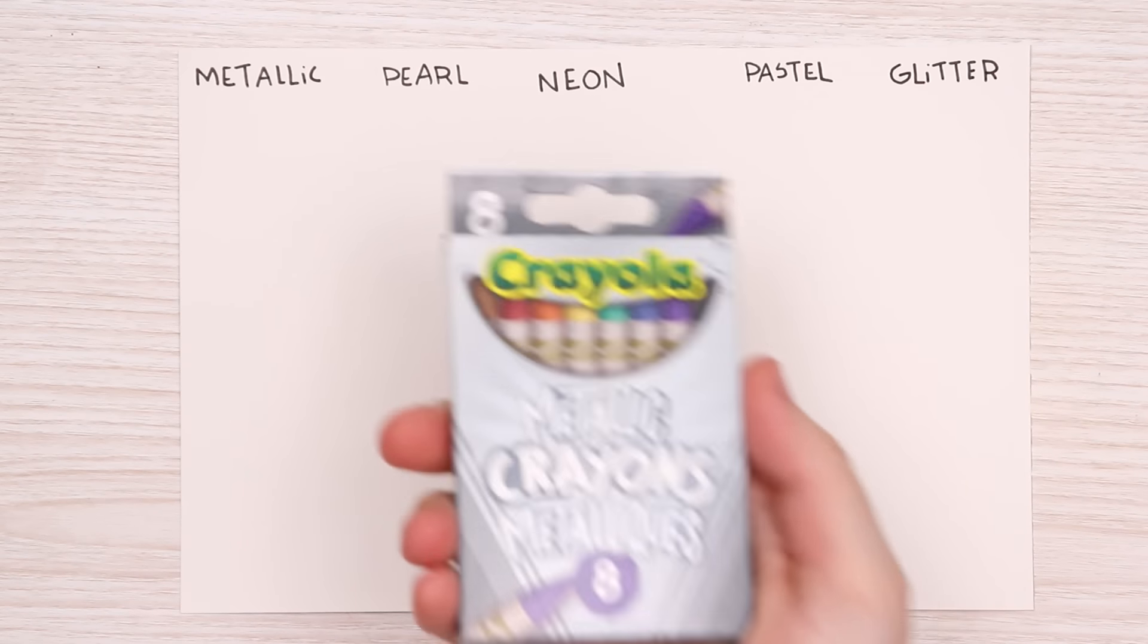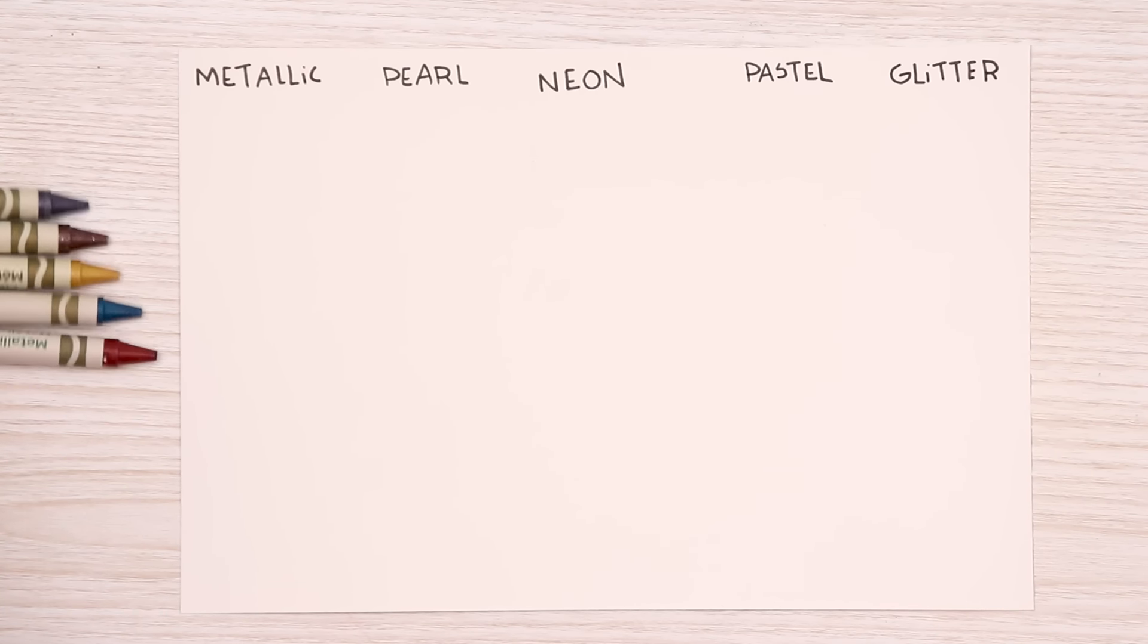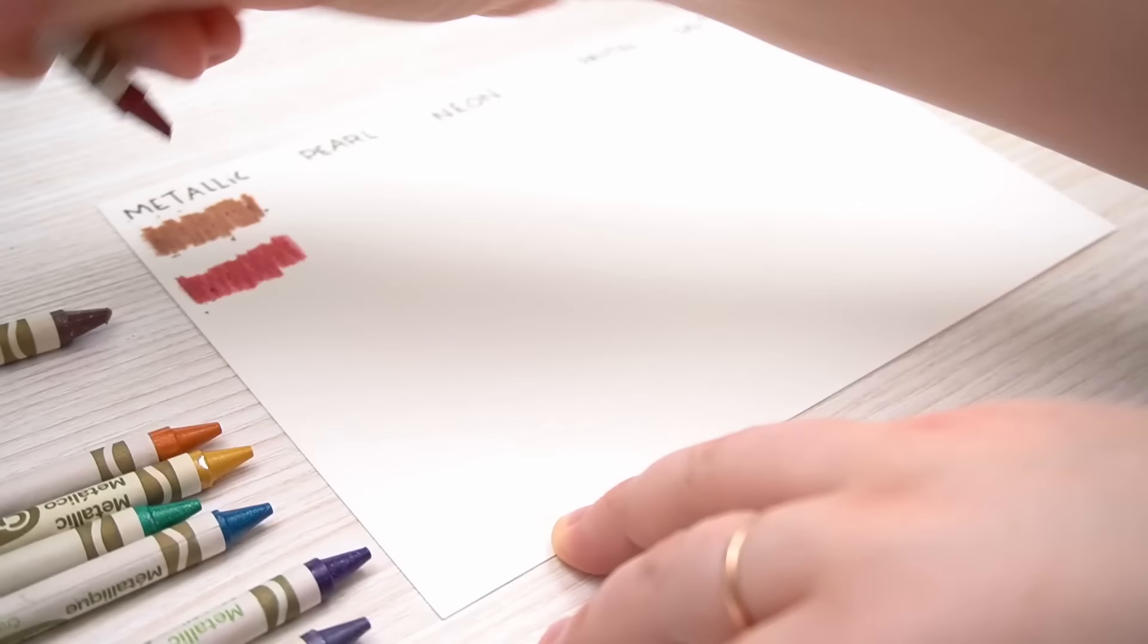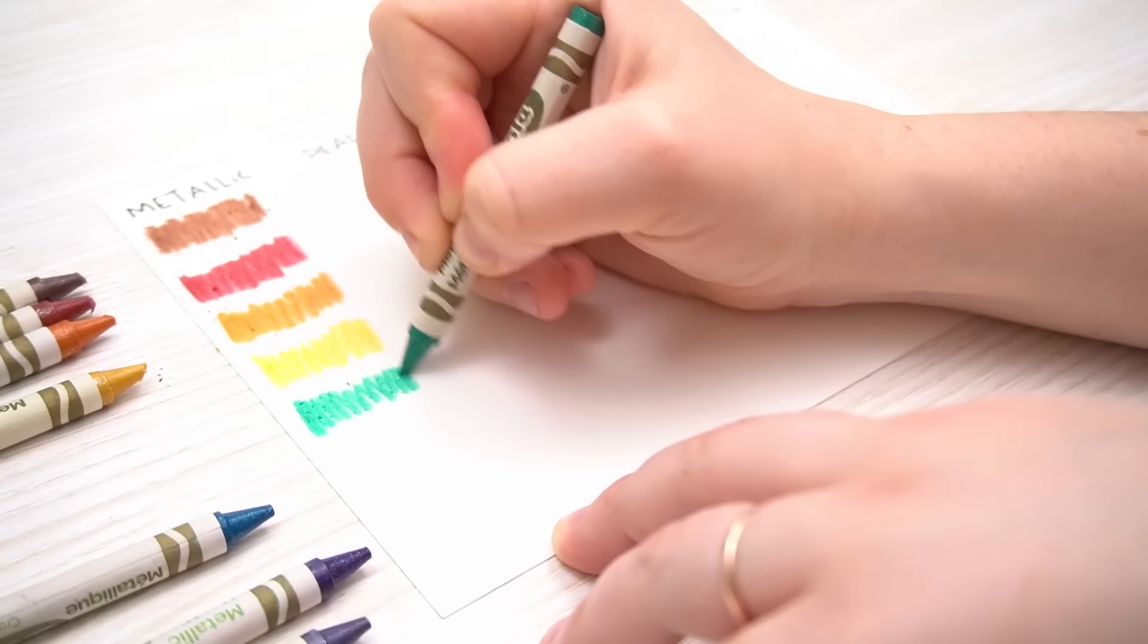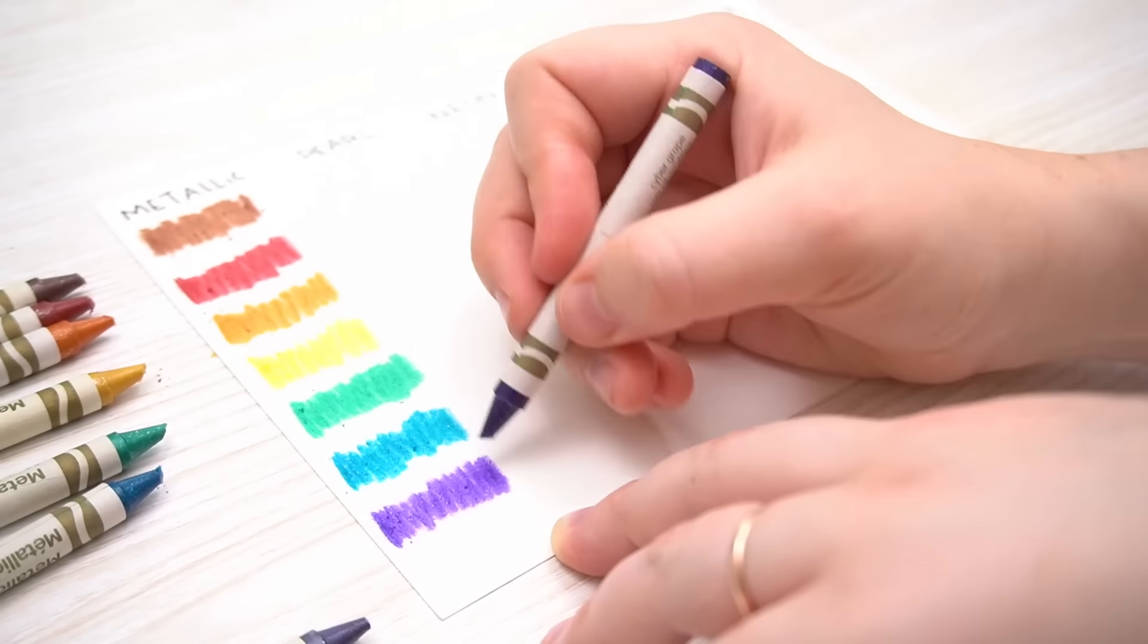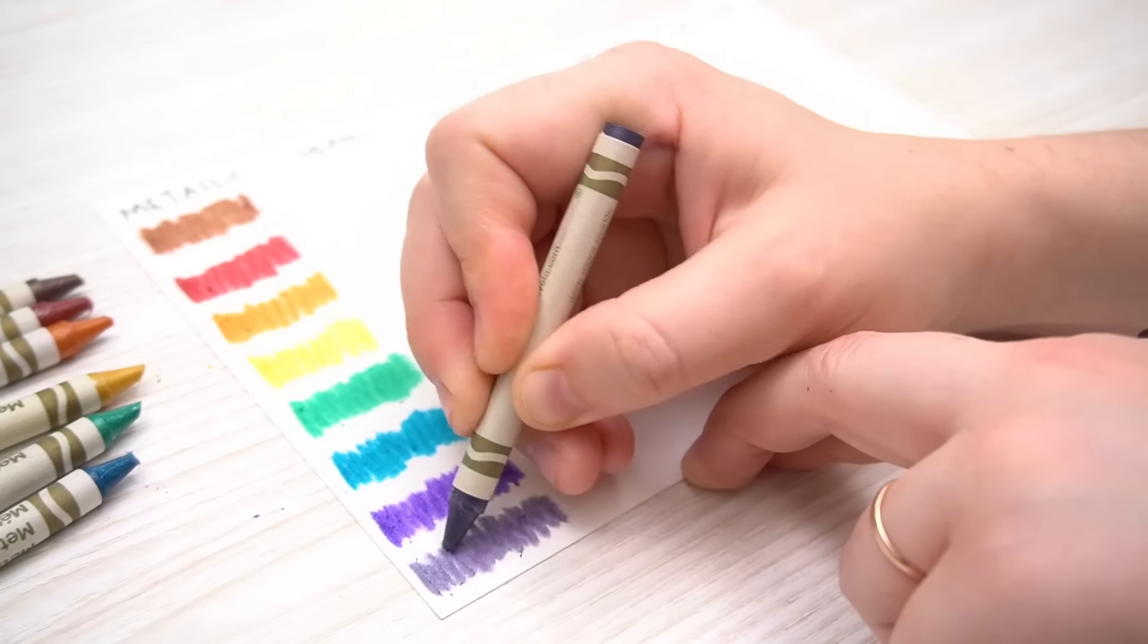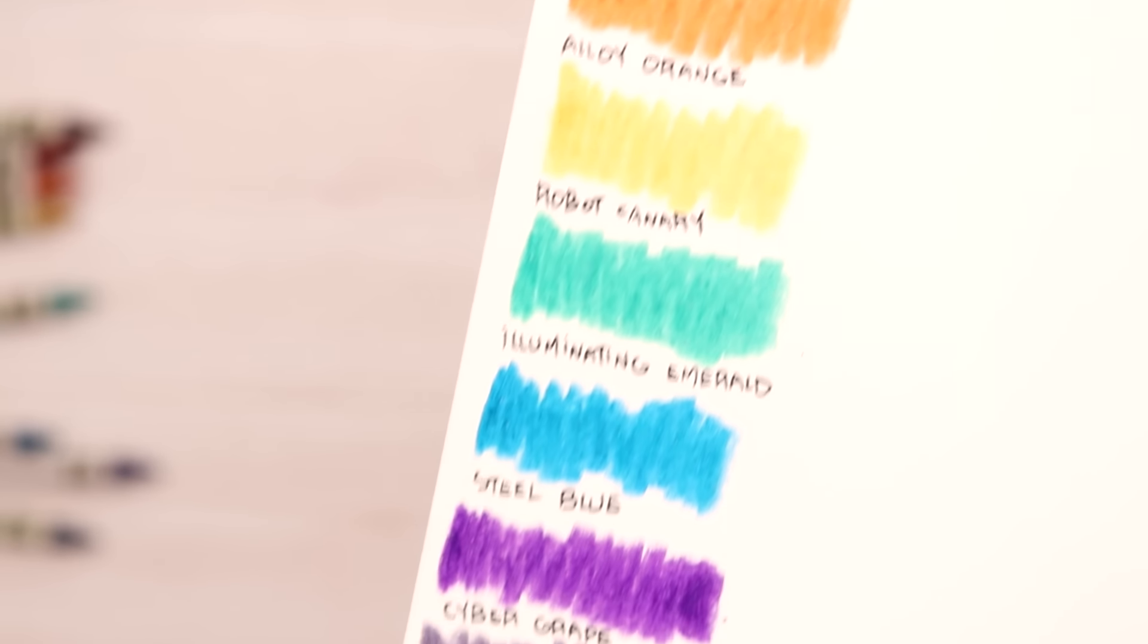Starting off with our metallic crayons. Going into this I wasn't really sure what to expect. What is metallic compared to say, I don't know, sparkly? I think the difference between these colors is just the amount of colors or maybe the type of colors they chose. I was really enjoying the names of the colors. Robot Canary, Big Dippo Ruby, Cyber Grape. I mean these names alone were very inspiring.